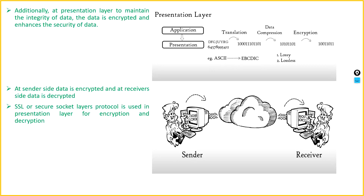Confidentiality is one of the core concepts of cybersecurity — it ensures that secret information is protected from unauthorized disclosure. Availability means protecting the functionality of support systems and ensuring that data is fully available at the point in time or per the requirement when needed by users.